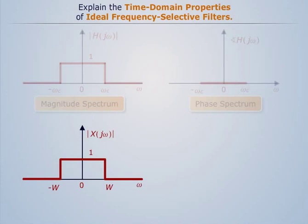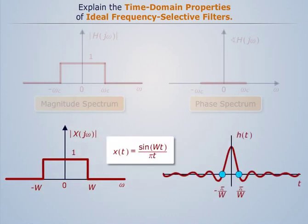We know that impulse response of the rectangular pulse of unit amplitude and width 2W is given as, which can be represented graphically as shown.